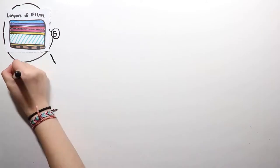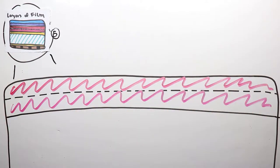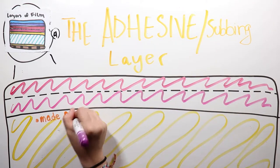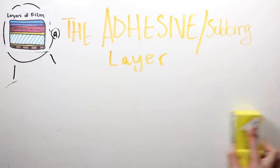Next, there is a layer of adhesive or a subbing layer, made from a firm and flexible plastic. This layer is needed because it provides support for the film and also provides support for the layers that come after it.